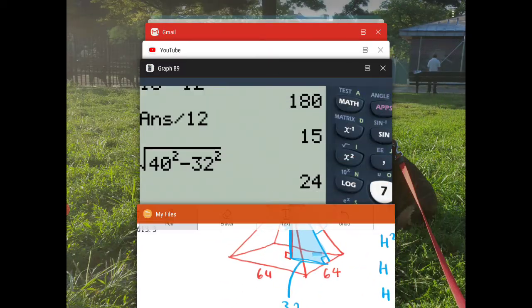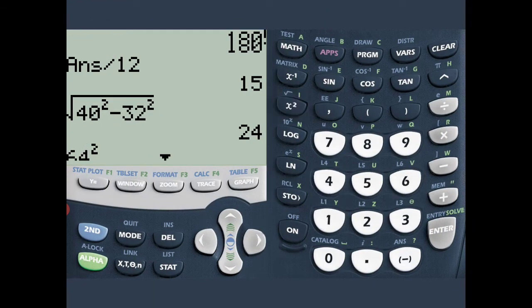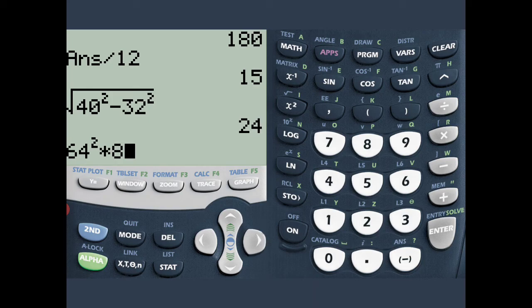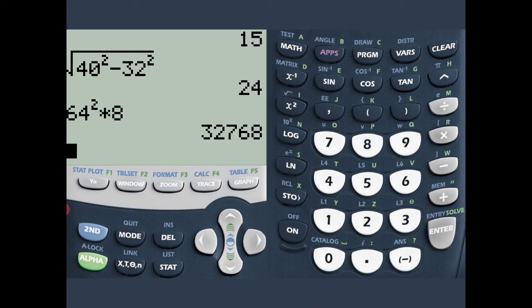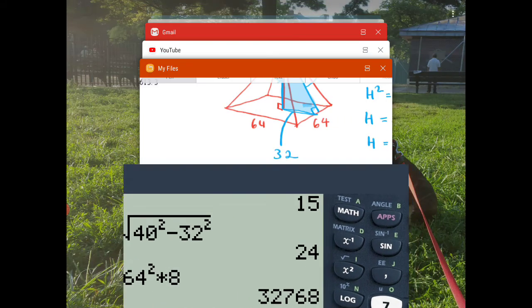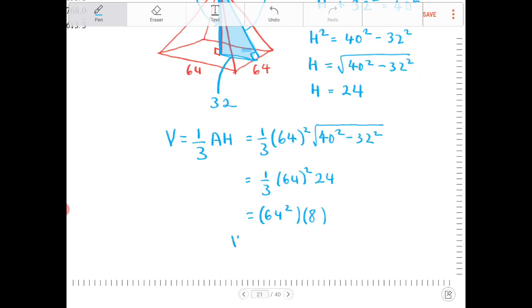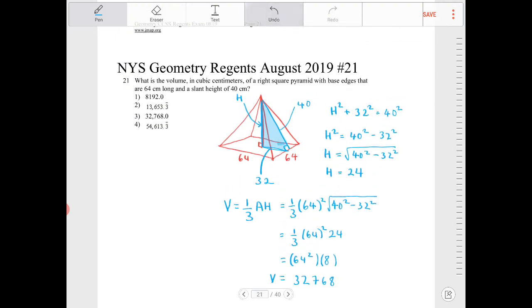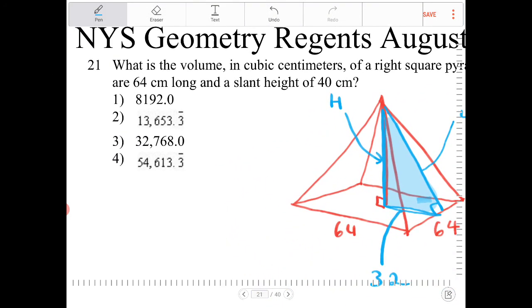Right, so let's enter that: 64² × 8. 32,768. 32,768. And what is that? 32,768. That would be option 3.